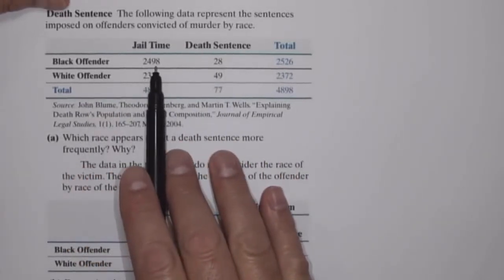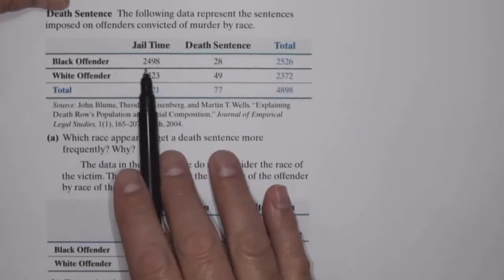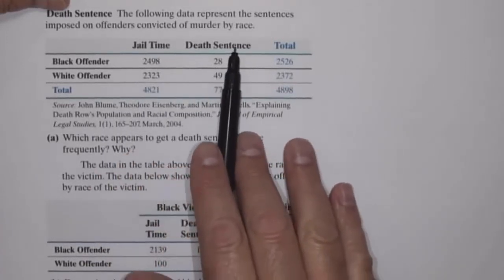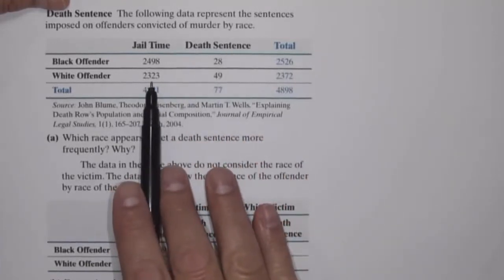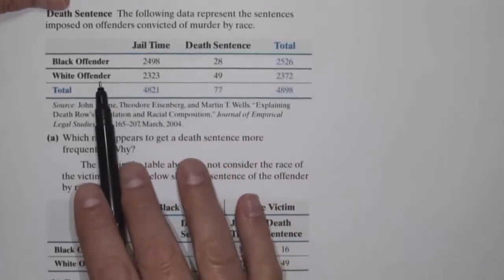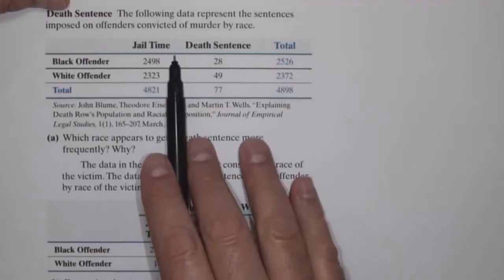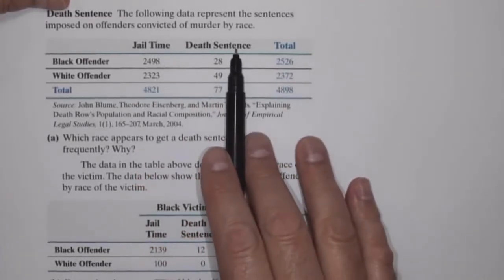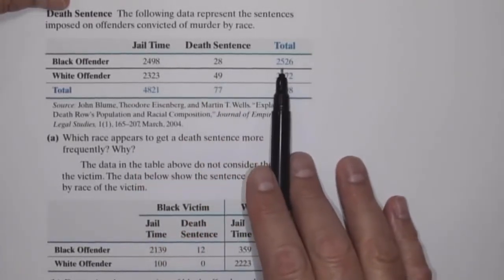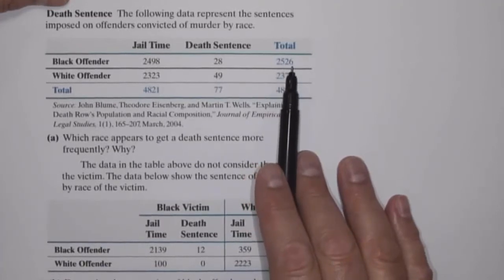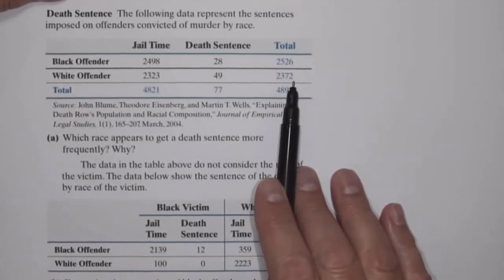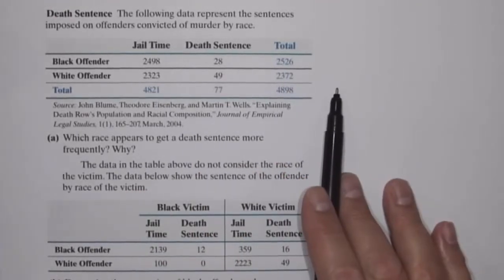There were 2,498 black offenders convicted of murder who were given jail time, and 28 were given the death sentence. There were 2,323 white offenders convicted of murder who received jail time, and 49 received the death sentence. So a total of 2,526 black offenders and 2,372 white offenders convicted of murder.